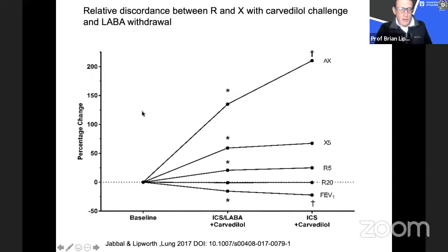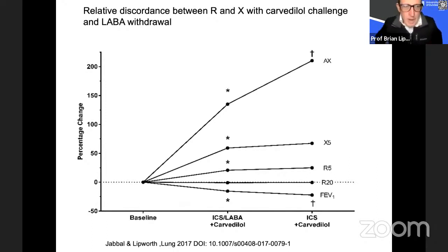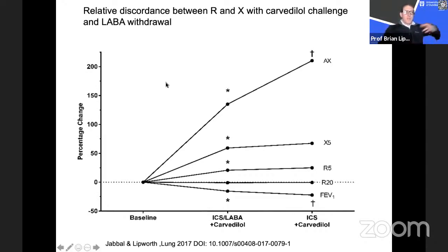The final slides show what happens to airway oscillometry when you bronchoconstrict a patient with COPD — analogous to a methacholine challenge test for asthma but applied to COPD. Patients were on ICS-LABA such as fluticasone-salmeterol or beclomethasone-formoterol at baseline, then given a carvedilol challenge.